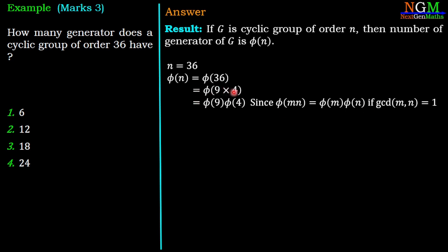Here m equals 9, n equals 4. And the gcd of 9 and 4 is 1. We can apply this result for φ(9 × 4) which is φ(9) × φ(4).